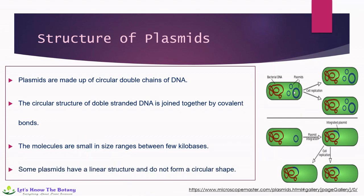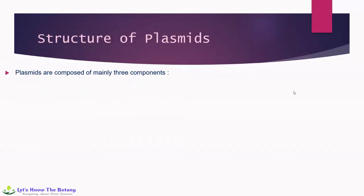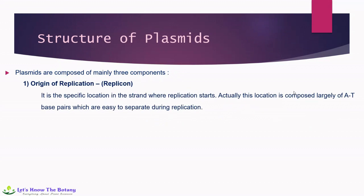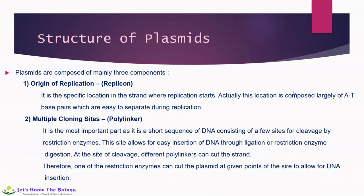Plasmids are composed of mainly three components. The first is the origin of replication, also called the replicon — the specific location in the strand where replication starts, composed largely of A-T base pairs which are easy to separate during replication. Another component is the multiple cloning site, also called the polylinker, which is a short sequence of DNA consisting of a few sites for cleavage by restriction enzymes. This site allows for easy insertion of DNA through ligation or restriction enzyme digestion. Different polylinkers can cut the strand at the site of cleavage, so one of the restriction enzymes can cut the plasmid at given points to allow for DNA insertion.